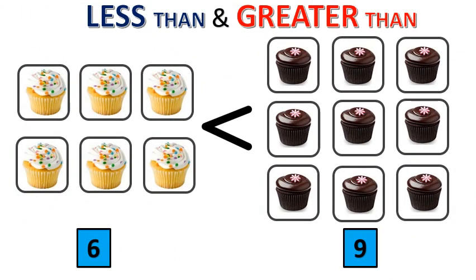So let's understand the concept here. The number of brown cupcakes are more when compared to white cupcakes. So greater than is towards the brown cupcakes. Here, 9 is greater than 6.